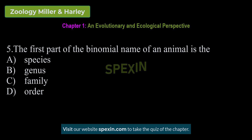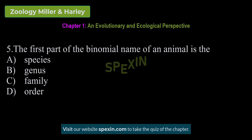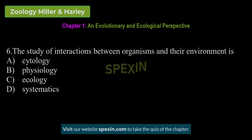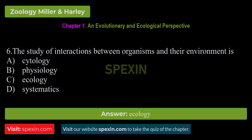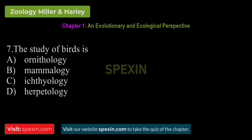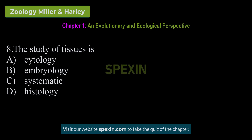The first part of the binomial name of an animal is the: Species — Genus — Family — Order. Correct answer: Genus. The study of interactions between organisms and their environment is: Cytology — Physiology — Ecology — Systematics. Correct answer: Ecology.